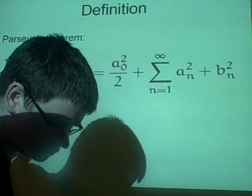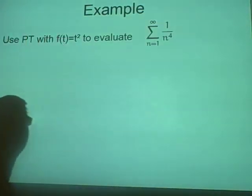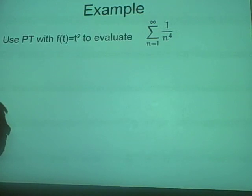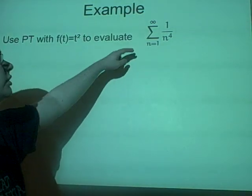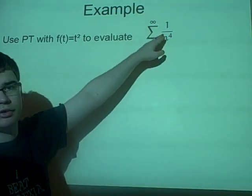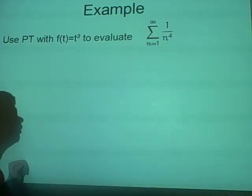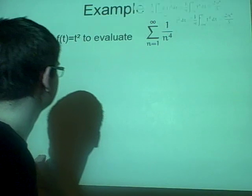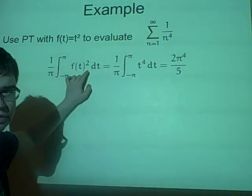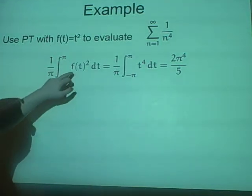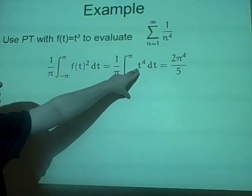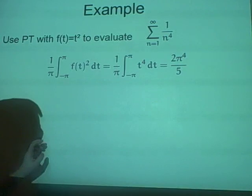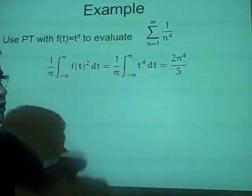Right now, let's have a question. Use Parseval's Theorem with the function f(t) = t² to evaluate this sum from n equals 1 to infinity of 1 over n to the 4. We'll do the left-hand side first, so we have 1 over π times integral from π to minus π of t to the 4, because t squared squared is t to the 4. That will give you the answer 2π⁴ over 5.